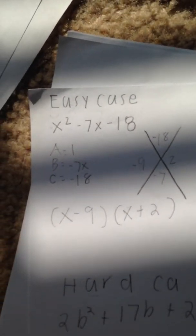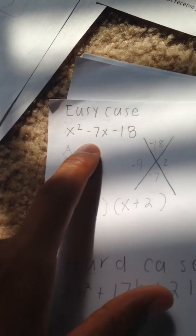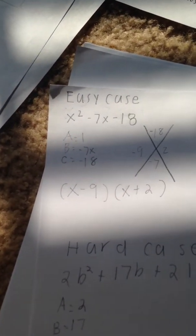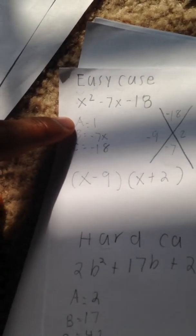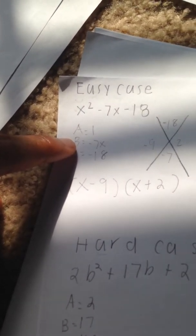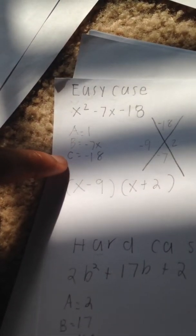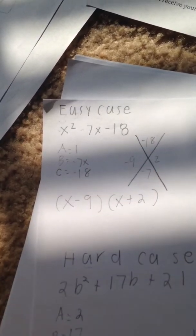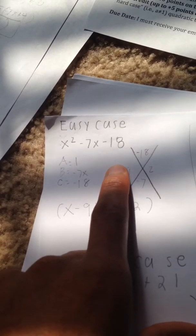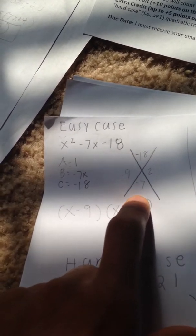For my first one I have an easy case trinomial, which means there's no number in front of the x squared value — that's what makes it an easy case. My A value is 1, my B value is negative 7x, and my C value is negative 18. My C value goes in the top of my diamond method and I have to find two numbers that multiply to give me negative 18 and add to give me negative 7.